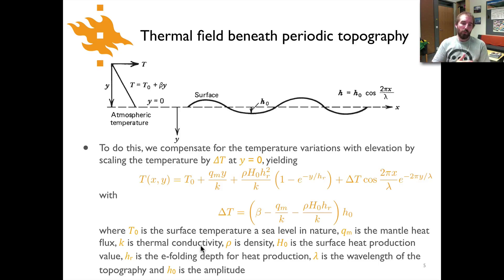Now we've got a heat production term in here which is rho h naught and then hr squared divided by k. hr in this case is the e folding depth so this is the depth at which the heat producing element's concentration decreases by 1 over e and that's multiplied by 1 minus e to the minus y over that e folding depth plus here's our delta t term times cosine of 2 pi x over lambda e to the minus 2 pi y over lambda and lambda is going to be the wavelength of the topography in this case.